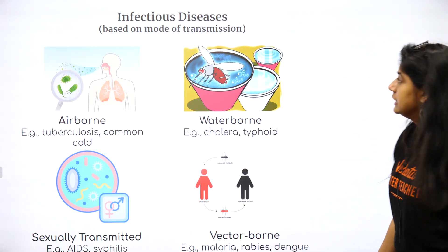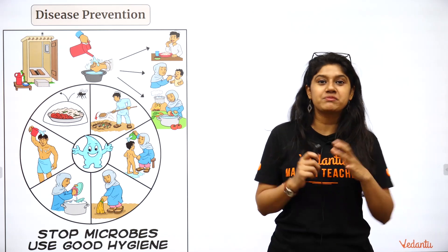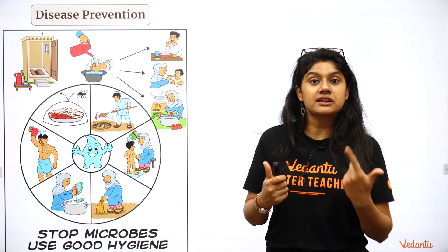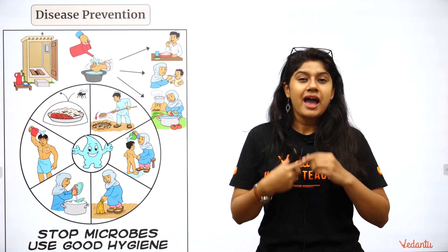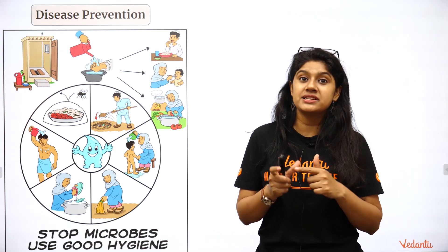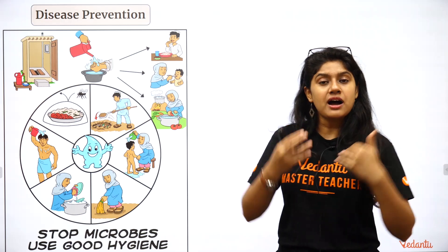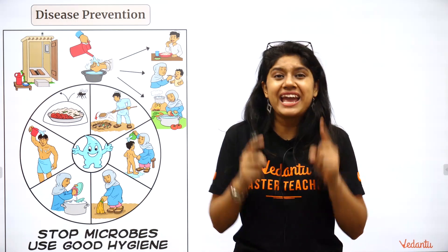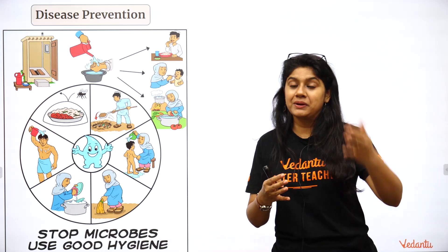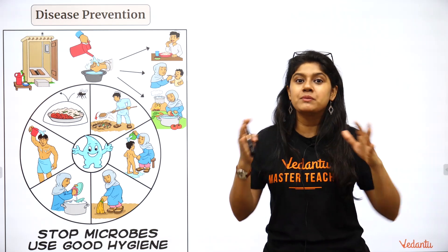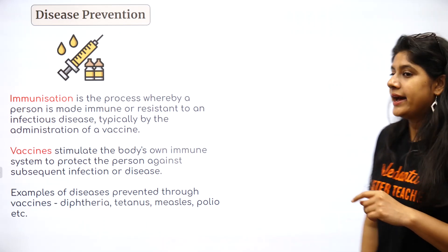Now let's talk about how we can prevent diseases. Basic steps include cleaning ourselves and our surroundings, maintaining proper sanitation, washing our hands before and after eating, following a healthy diet, taking medicines on time, getting vaccinations, and spreading awareness. When we do all of this, we and the people around us become completely aware and can keep themselves protected.